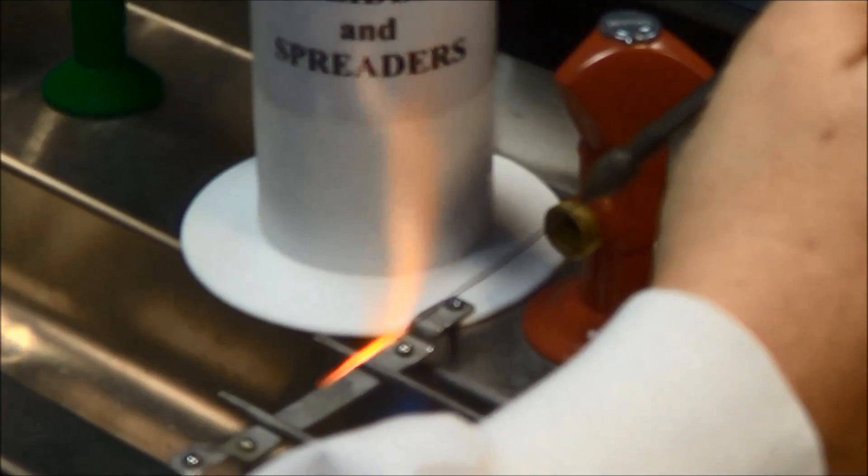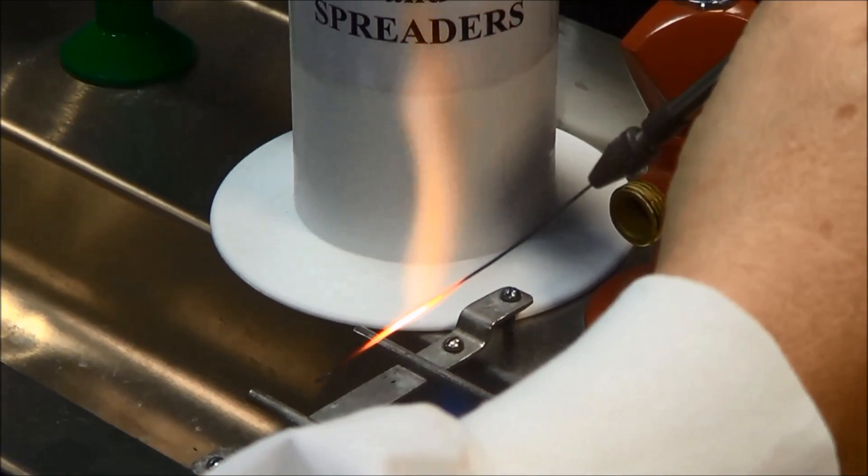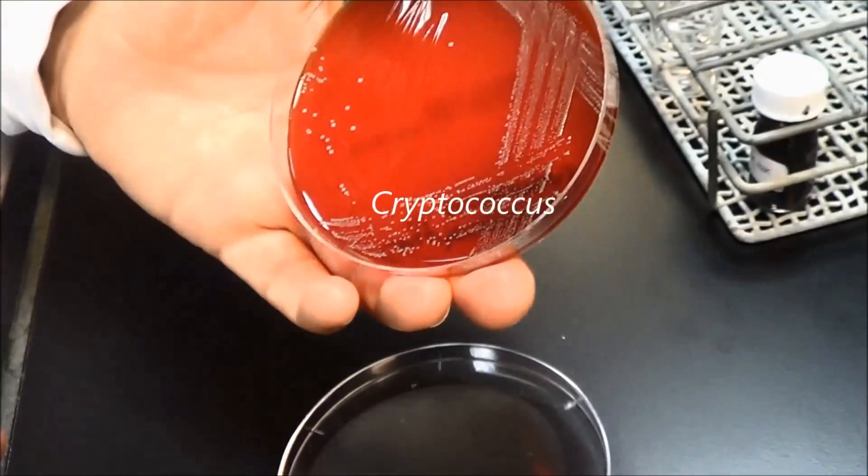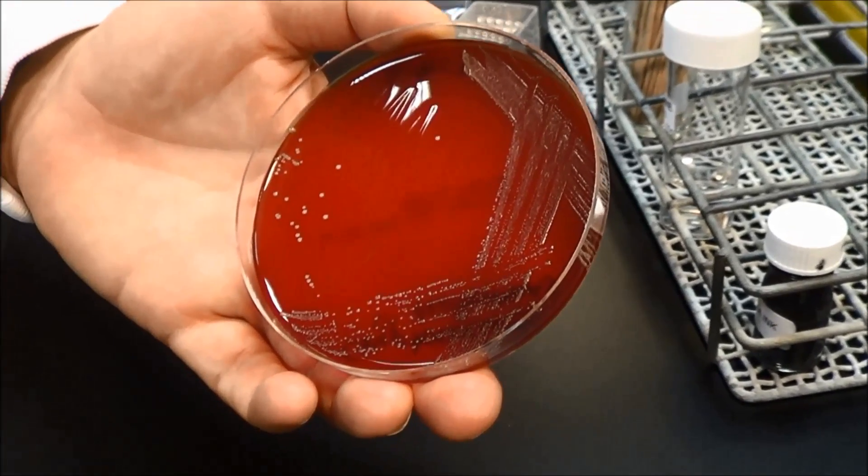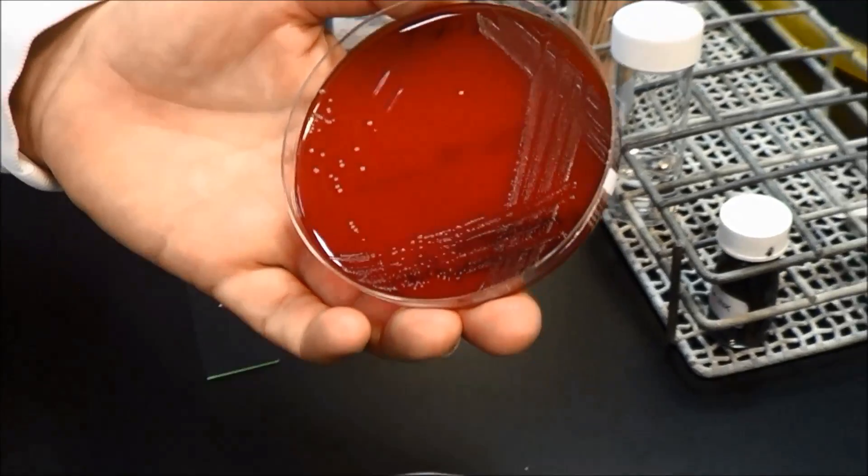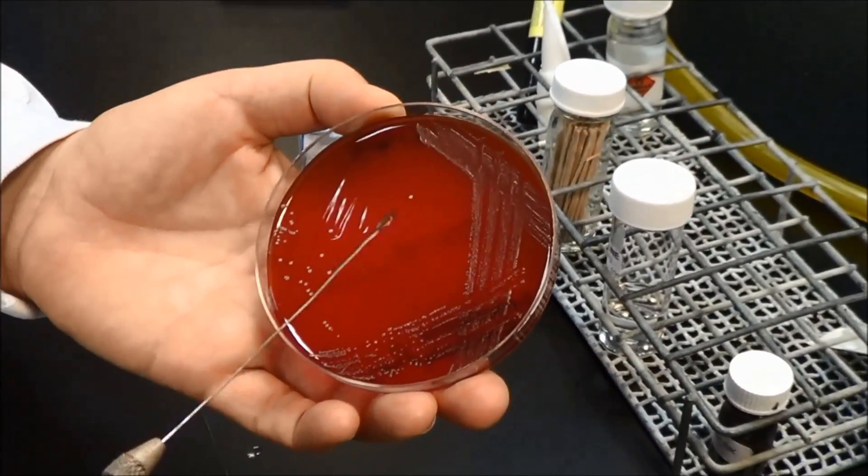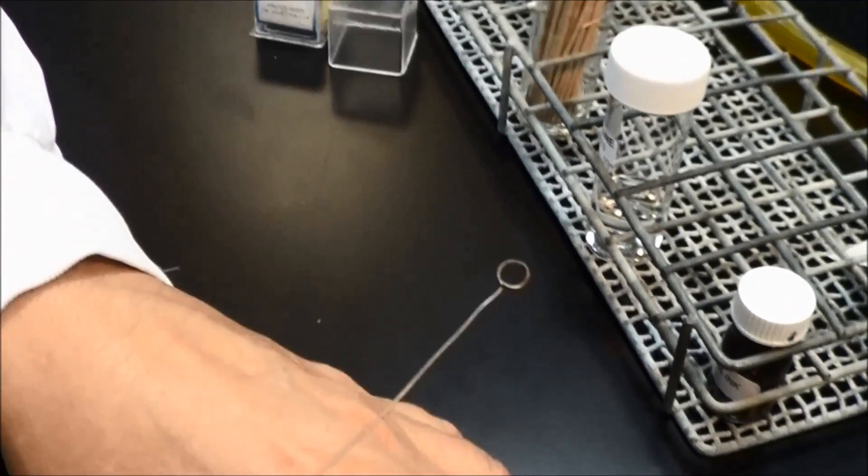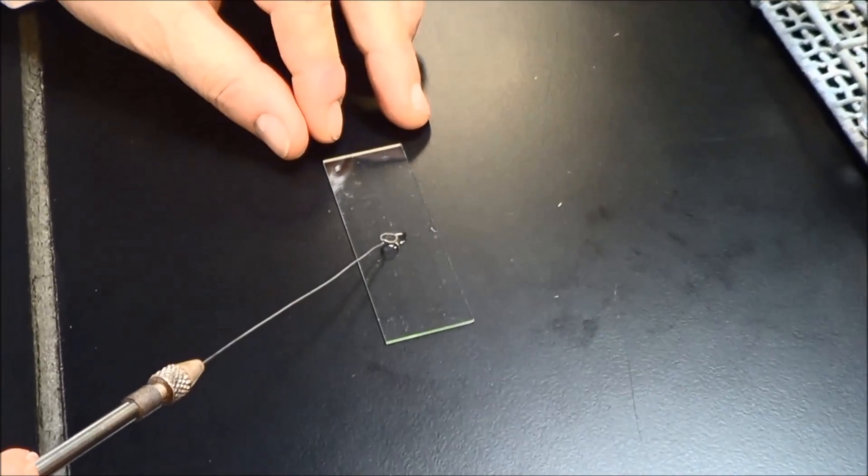Re-sterilize the loop. Take a small amount of growth from a well-isolated colony on a blood agar plate. Make a light suspension by emulsifying the yeast in the saline. To the naked eye, the suspension should be barely visible as cloudiness.